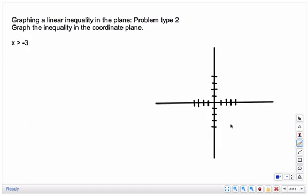Let's look at one more. So here I give you x is greater than negative 3. There's no equal to part, so it's going to be dashed, a dashed line. And x equals negative 3.